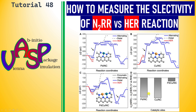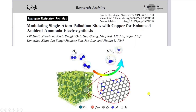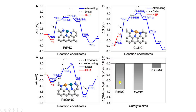This is a paper published in Angewandte Chemie. They used graphene-based dual atom catalysts for dinitrogen reduction to ammonia formation. These are the calculated energy profiles for the dinitrogen reduction. First is the Pd catalyst — this is the hydrogen binding energy on the Pd site and this is the nitrogen reduction profile.